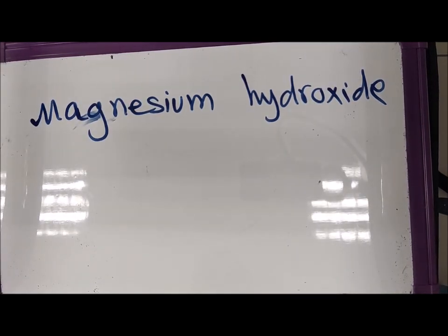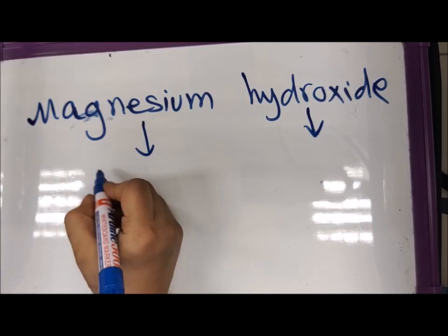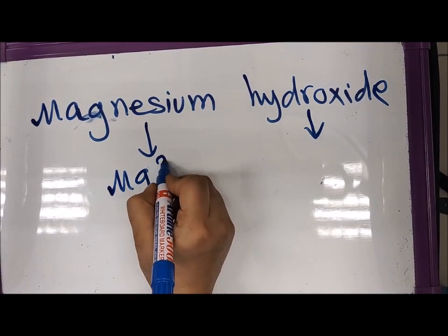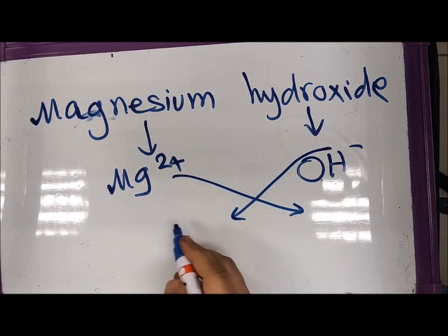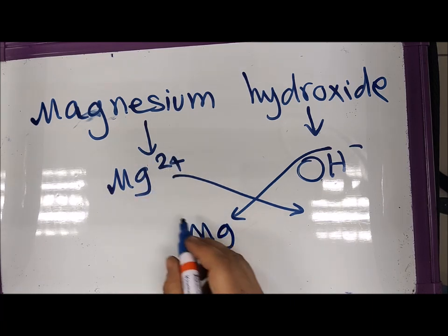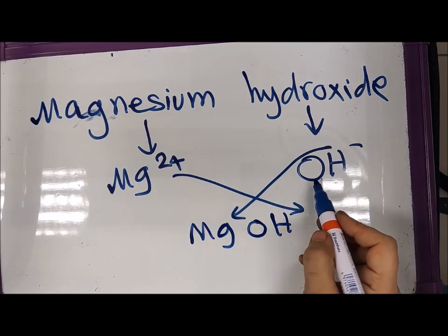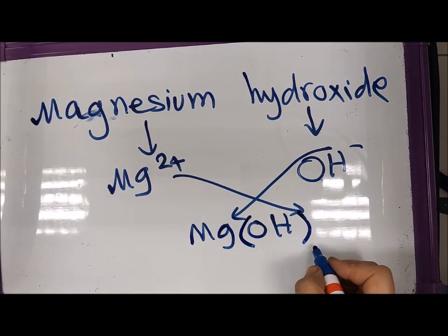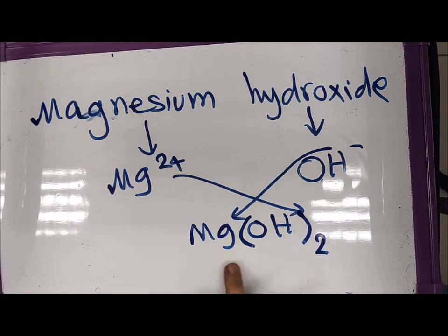Now work out magnesium hydroxide. First write the ions: magnesium is Mg²⁺ (Group 2), and hydroxide is OH⁻ — that's what you must memorize. Swap the numbers: Mg gets 1 (no need to write), and OH gets 2. Because the 2 applies to both atoms in OH, you put it in brackets: Mg(OH)₂. This means 2 hydrogen and 2 oxygen atoms. That is magnesium hydroxide.